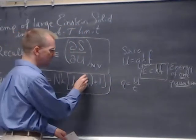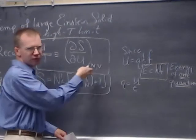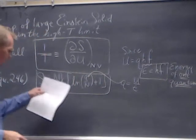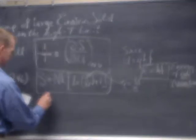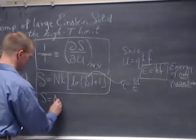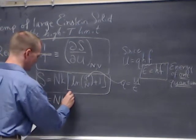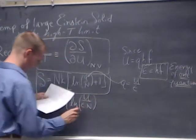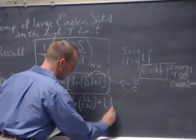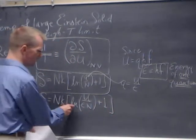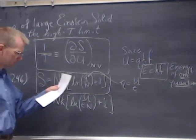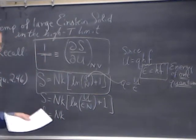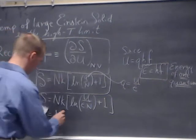I wanted to replace Q with something involving our normal measure of energy U. So I'll solve for Q and substitute that into the entropy equation. Now I'm going to expand this natural logarithm and multiply through by Nk.